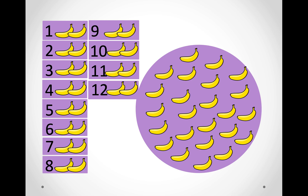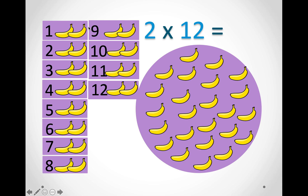In this picture there are two bananas in each group and there are twelve groups. So we can say two times twelve and count in twos to find our answer: two, four, six, eight, ten, twelve, fourteen, sixteen, eighteen, twenty, twenty-two, twenty-four. So the answer is twenty-four.